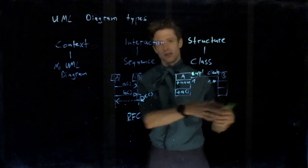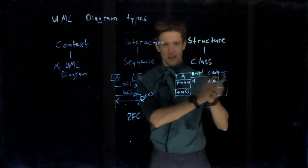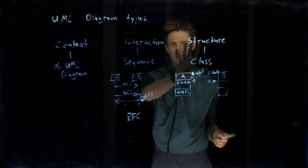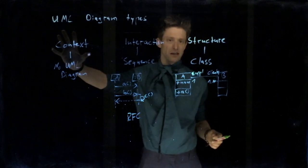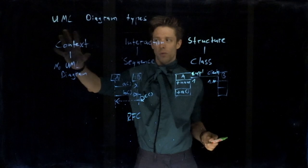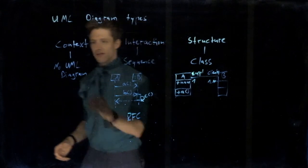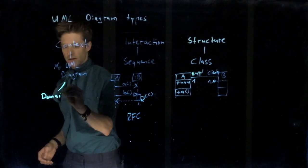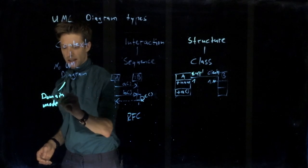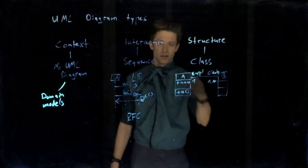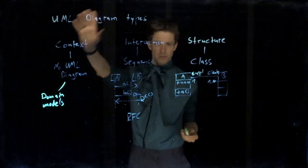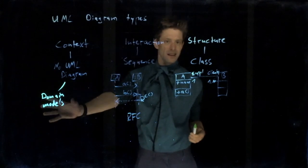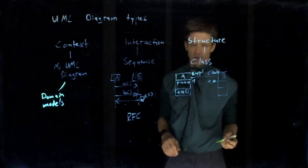You have books, you have loans, you have user accounts, you have maybe certain areas in the library. These things you can describe in a class diagram. You're not really describing a system structure, but you're describing the context of the system. You describe logically what the domain contains. These are the so-called domain models.